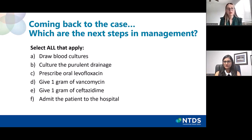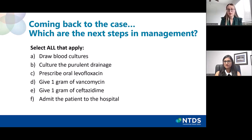We would definitely collect culture data before treating the patient — culture the purulent drainage from the catheter site, as well as obtain two sets of blood cultures. Then empirically treat the patient with broad-spectrum antibiotics to cover both gram-positive cocci and gram-negative bacilli: one gram of vancomycin and one gram of ceftazidime during the last hour of dialysis. Given that the patient is hemodynamically stable and not septic-appearing, I would manage this as an outpatient issue with close follow-up in the dialysis unit.